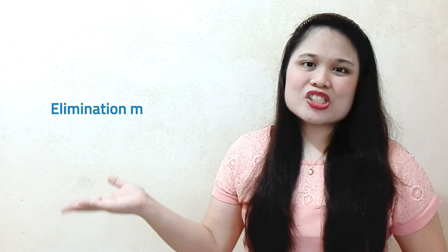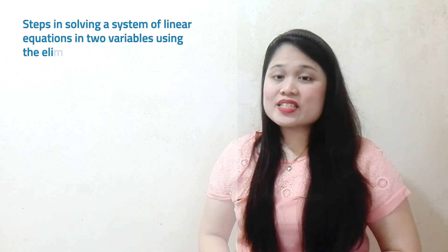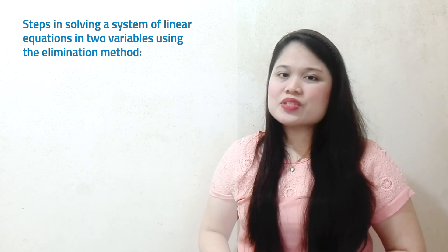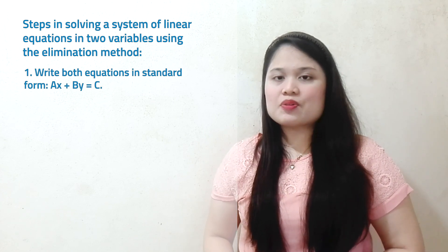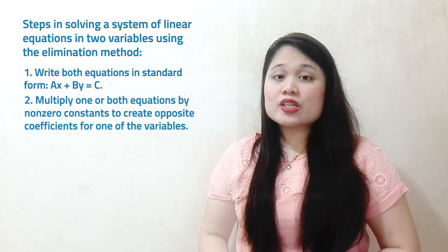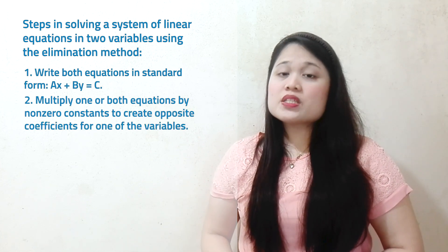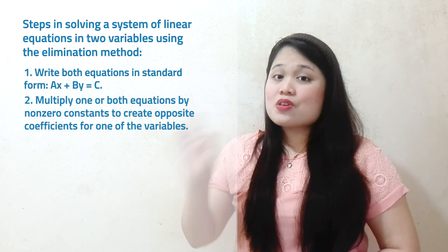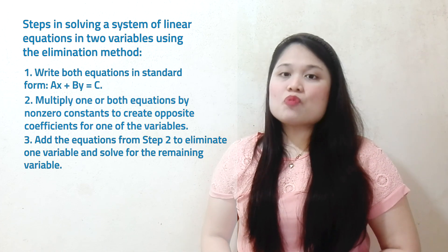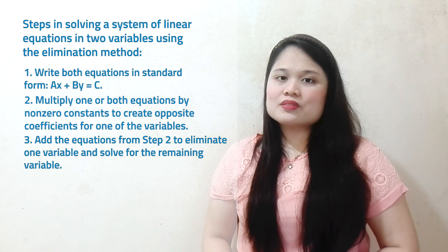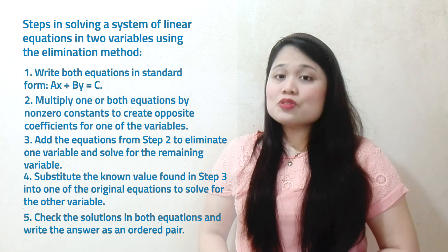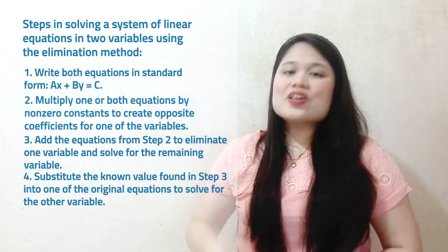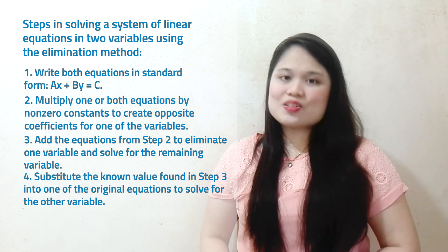In solving a system of linear equations in two variables, we can use the elimination method. Here are the steps: First, write both equations in standard form, ax plus by is equal to c. Second, multiply one or both equations by non-zero constants to create opposite coefficients for one of the variables. Third, add the equations from step 2 to eliminate one variable and solve for the remaining variable. Fourth, substitute the known value found in step 3 into one of the original equations to solve for the other variable. Fifth, check the solutions for both equations and write the answer as an ordered pair.